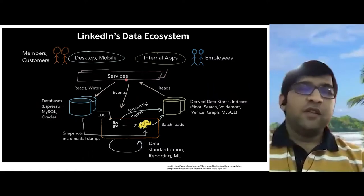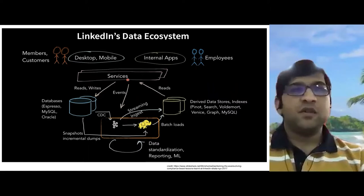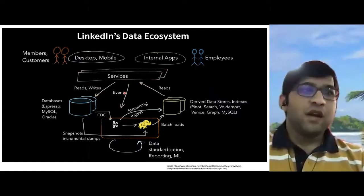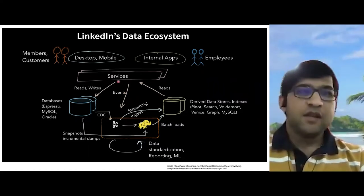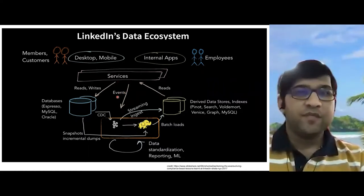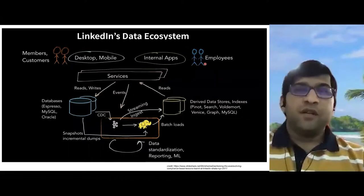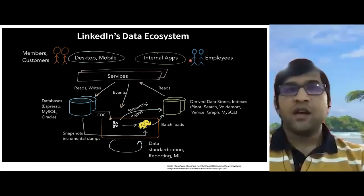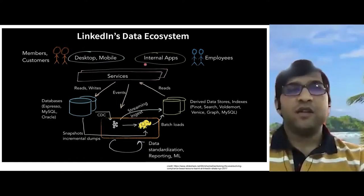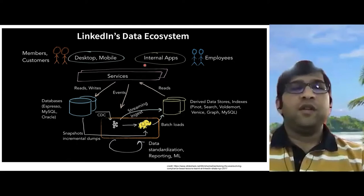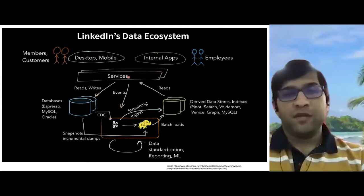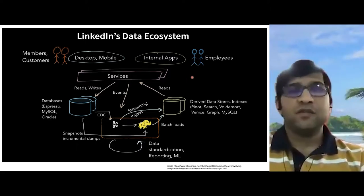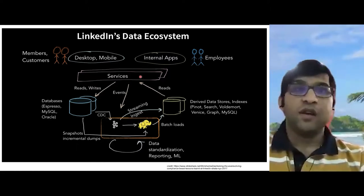When the user is navigating across various pages and doing activities, all this tracking data is also generated in the form of events. We leverage Kafka technology here, and all this tracking data is emitted using Kafka events. There are also LinkedIn employees who make use of this data through internal applications, generating derived data on top of it. Additionally, third-party services also generate data that comes into the LinkedIn data ecosystem.